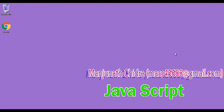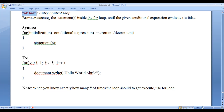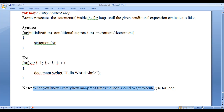Hello friends. Welcome to the JavaScript video tutorial series. In the previous video tutorial we understood the for loop — its syntax, how it gets executed, and we had an example. We understood when to use a for loop: when we know exactly how many times the loop should get executed, we use a for loop.